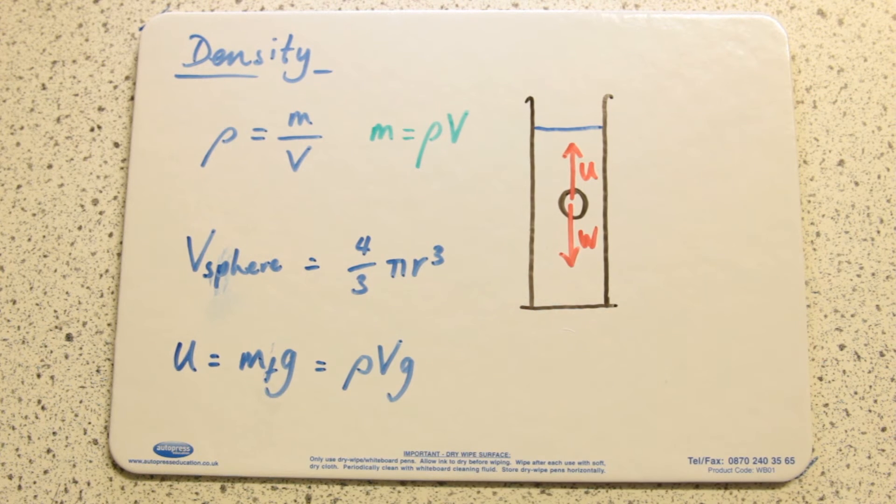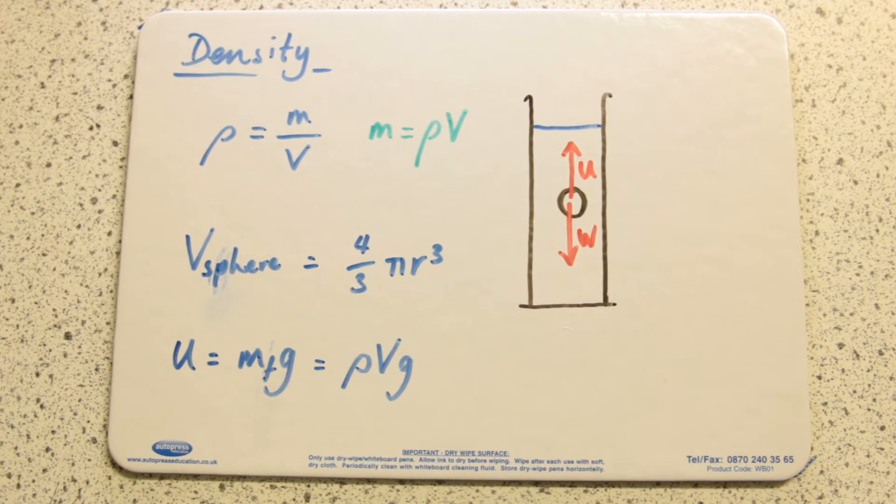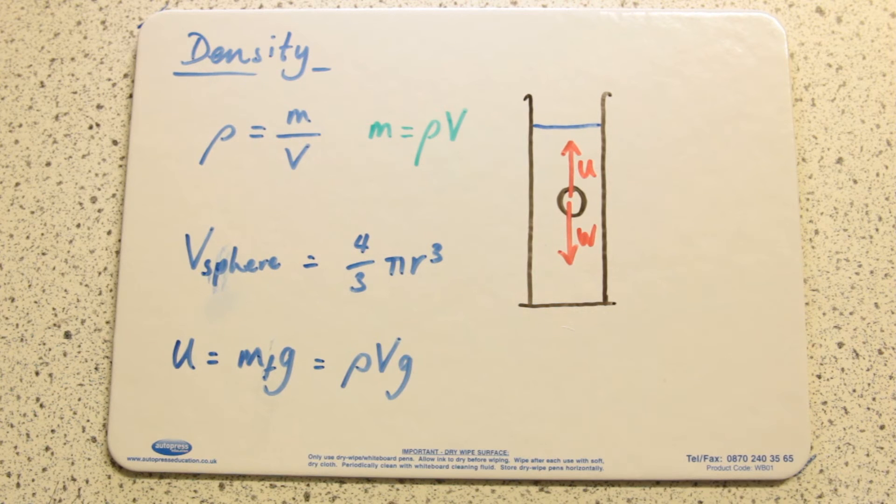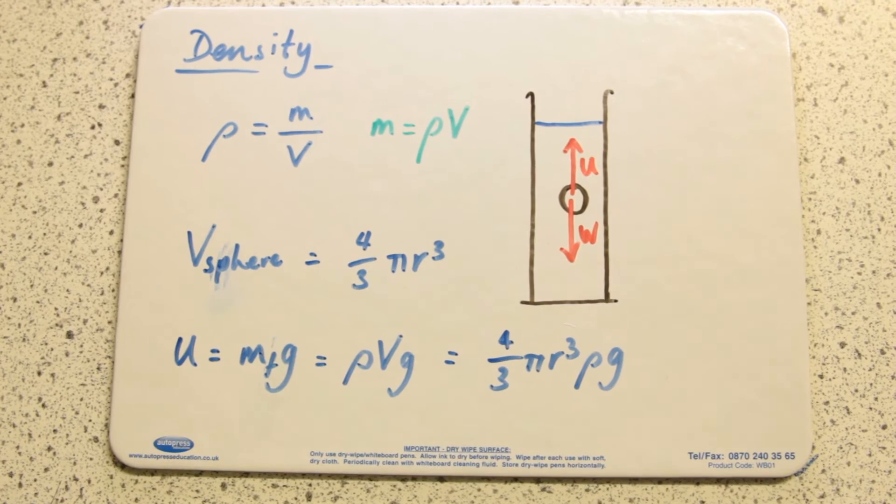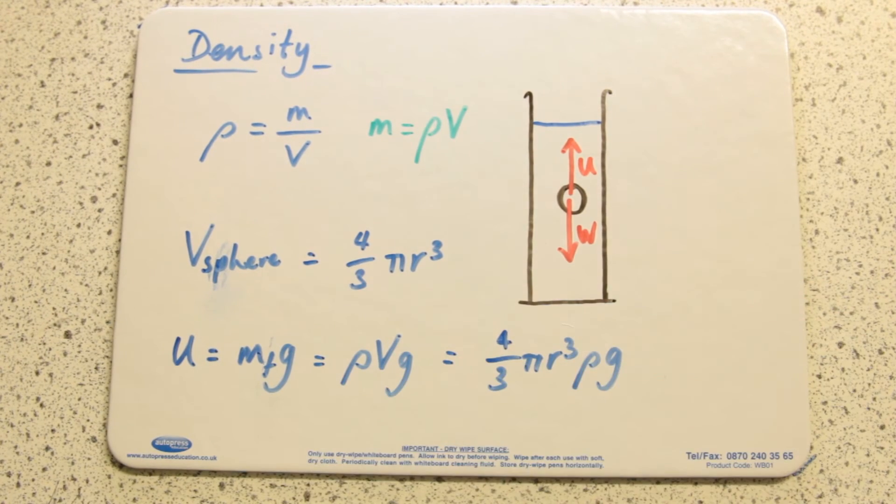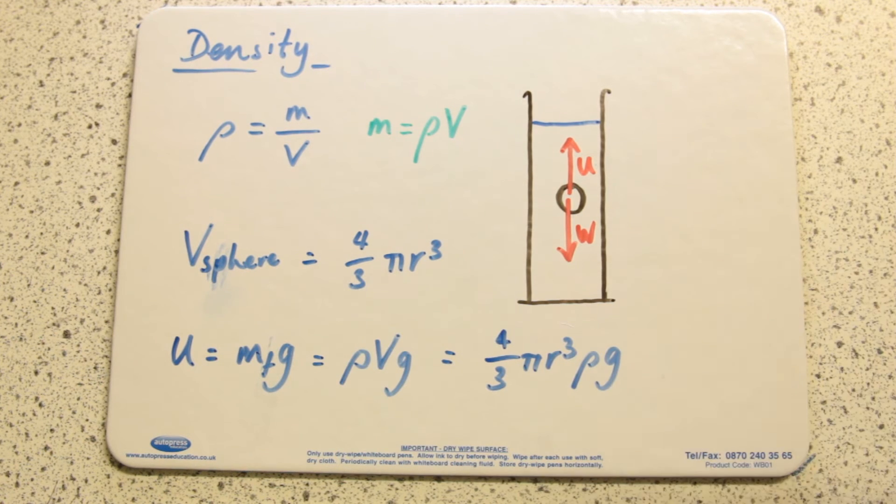The upthrust would equal the mass of the fluid m_f times gravitational acceleration. If we rearrange the density equation, mass is ρ times V. We can sub that in, and now our upthrust is ρ_f times the volume of the sphere times g.